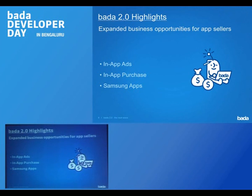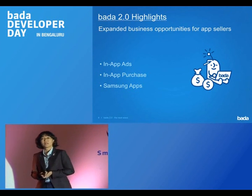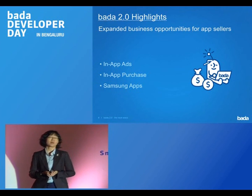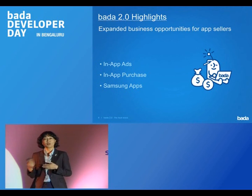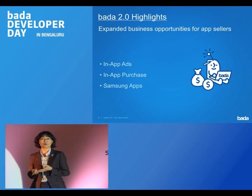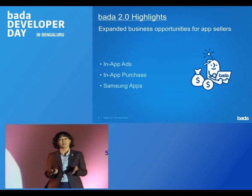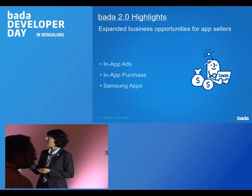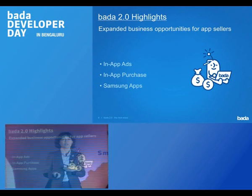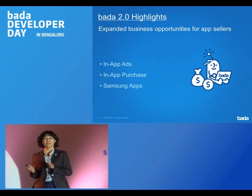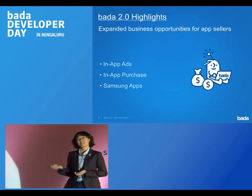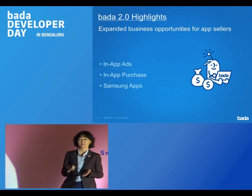Last but not least, we also increase the business opportunity for you. Bada 2.0 supports in-app ads — you can insert advertisements in your application with just a few lines of Bada 2.0 ad APIs. We also provide in-app billing for in-app purchase, so your users can conveniently buy items while enjoying your applications. Samsung Apps also provides many useful methods to make your application more appealing — for example, device users can use your application for a trial period and purchase it later. I believe these features will help your business and increase your profit.